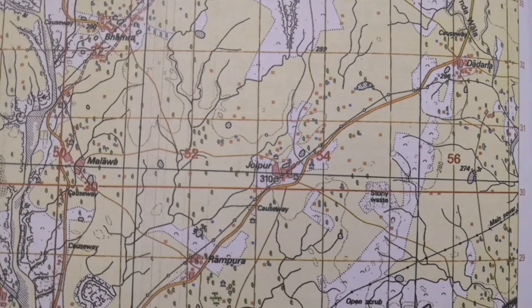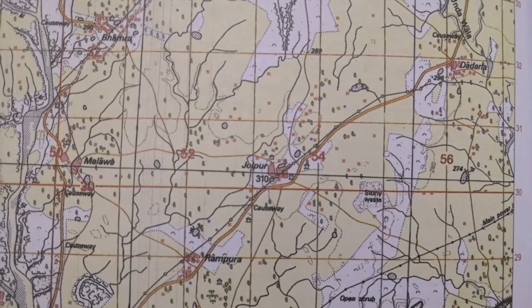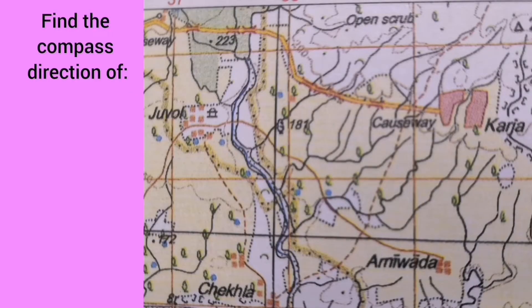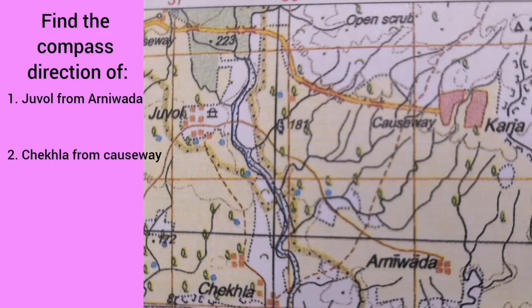Now take down some exercises for working out. Find the compass direction of: Settlement Jolpur from Settlement Arni Vada; Settlement Chekla from Cosway; Settlement Jolpur from Settlement Karja. Come on, do it fast using the shortcut method.